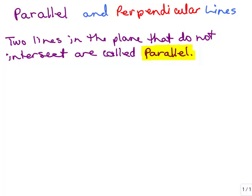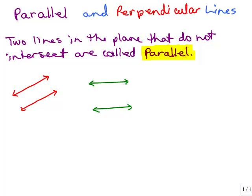In this video we're going to go over parallel and perpendicular lines and learn something about the slopes of parallel and perpendicular lines. So first of all, two lines in the plane that do not intersect are called parallel. If you look at two parallel lines, they might be like that or like this. It doesn't matter how far apart they are but they're never going to intersect and they're going infinitely in both directions. And what you might notice is that their slope looks like it would be the same because it's at the same slant.